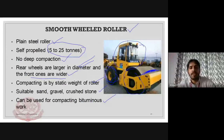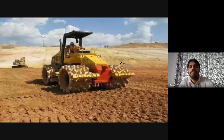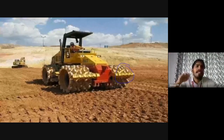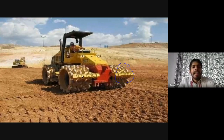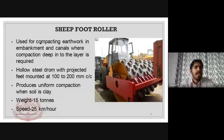Next we are going to the sheep foot roller. The sheep foot roller has projections on it. These projections give it the name 'sheep foot.' The sheep foot roller is used for compacting embankments and canal works, and it is capable of very deep compaction.